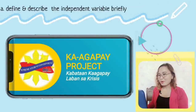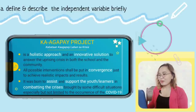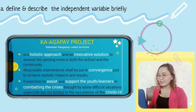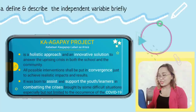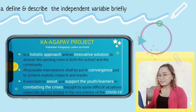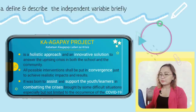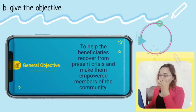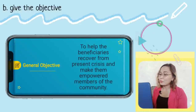But what is Kaagapay Project? Well, it is a Supreme Student Government SSG project described as a holistic approach and an innovative solution to answer the uprising crisis in both the school and the community. All possible interventions shall be put in convergence just to achieve realistic impacts and results. It was born to assist and support the youth or learners in combating the crisis brought by difficult situations, including the COVID-19 pandemic. The general objective of the program is to help the beneficiaries recover from the present crisis and make them empowered members of the community.